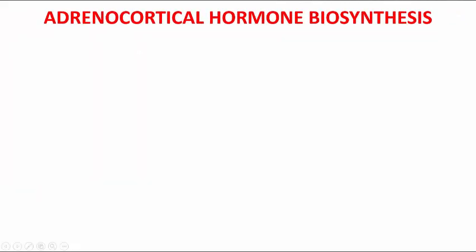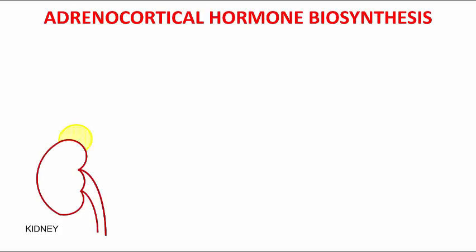Today we will talk about the biosynthesis of adrenocortical hormones. Let us begin with the structure of the adrenal gland. The adrenal, or suprarenal, gland is located on top of each kidney and produces a variety of hormones.